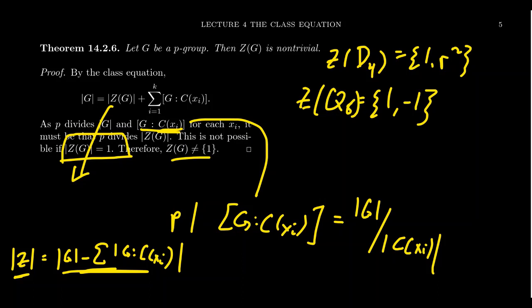So there has to be something in the center other than the identity. It might not be much — with D4 and Q8, the center has order two, but that's the point: these are two groups, so two has to divide the center's order. These are small centers, but there is still something in there. And once the center is non-trivial, that can give you a lot of information. For non-abelian P groups especially, the center is a non-trivial normal subgroup you can use in various ways.